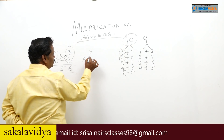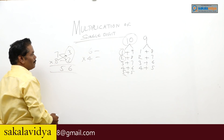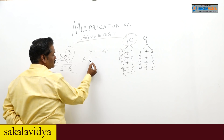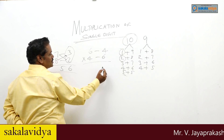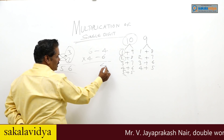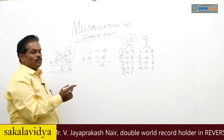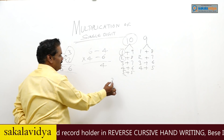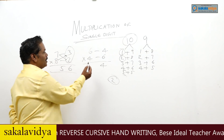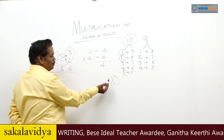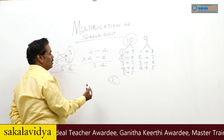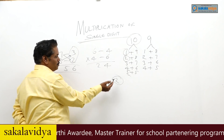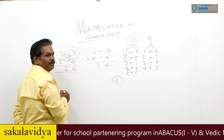6 into 4: complement of 6 is 4 and complement of 4 is 6. 4 into 6 are 24 — here we are getting a 2-digit number. So we write only the units place, which is 4, and carry 2. From 6 minus 6 is 0, plus 2 is 2; or 4 minus 4 is 0, plus 2 is 2. So 6 into 4 is 24.